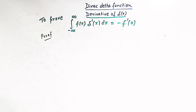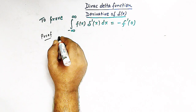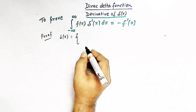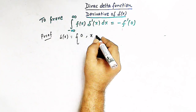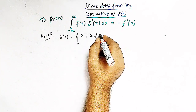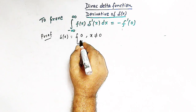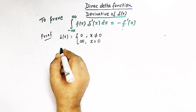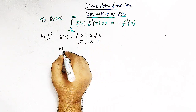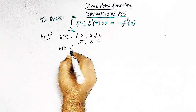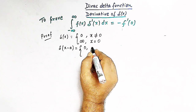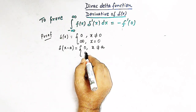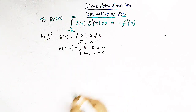Let us quickly see the definition of the delta function. The delta function is defined as delta of x equals 0 whenever x is not equal to 0, and delta of x is infinity when x is equal to 0. We can extend this definition: delta of x minus a equals 0 whenever x is not equal to a, and delta of x minus a is infinity whenever x is equal to a.